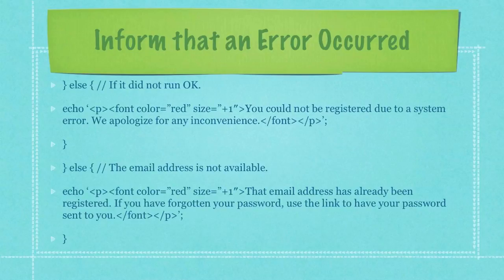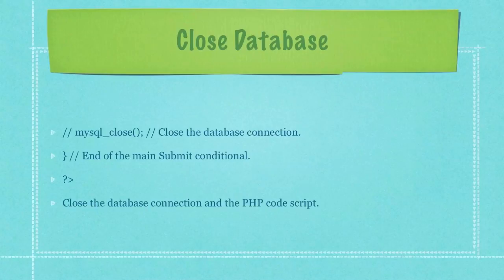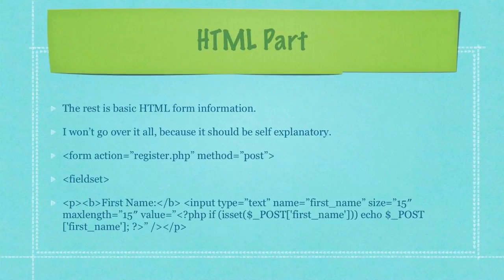If everything didn't run okay, we explain to the new user why we are unable to register them. If one of the data tests fails, we inform the user to please try again. Finally, we close the database connection and the PHP code script. Here is the rest of the basic HTML form information — I won't go over it all because it should be pretty much self-explanatory. If you don't understand it, please refer to my HTML tutorial.